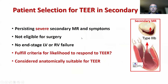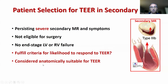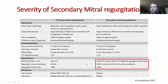To summarize, the criteria for patient selection for TER in secondary MR: persisting severe secondary MR with symptoms, not eligible for surgery, no end-stage LV or RV failure, fulfilled criteria for likelihood to respond to TER, and considered anatomically suitable for TER.